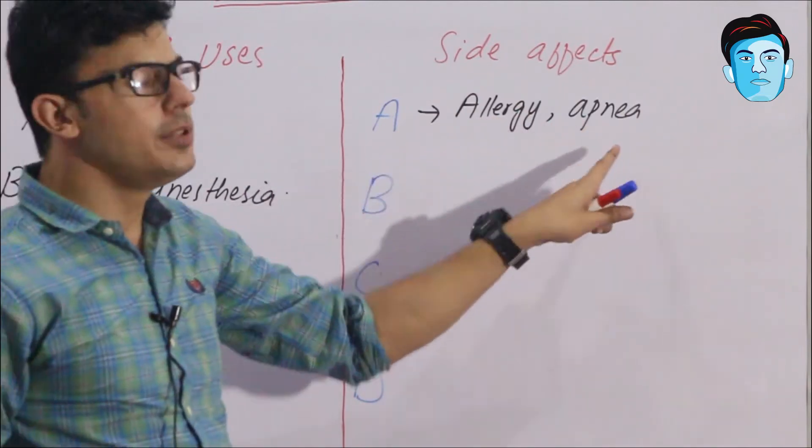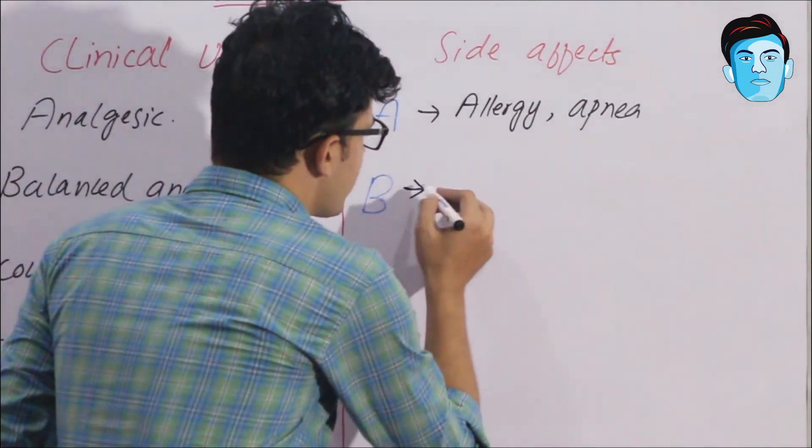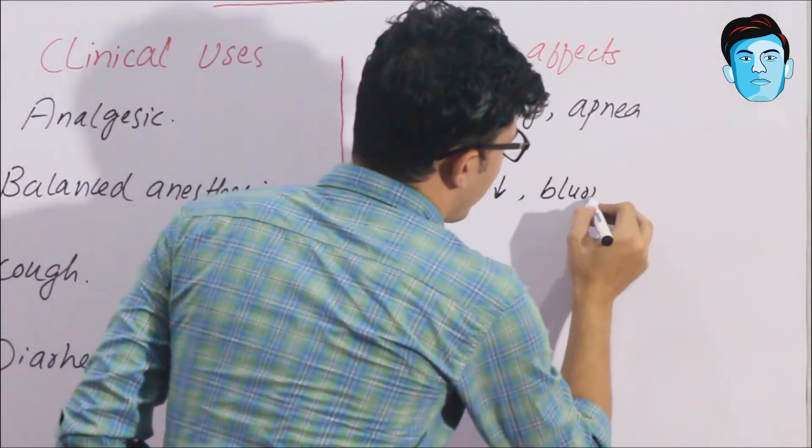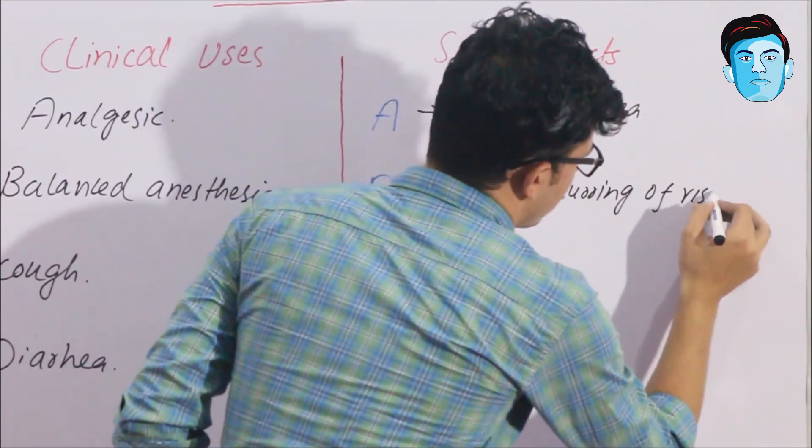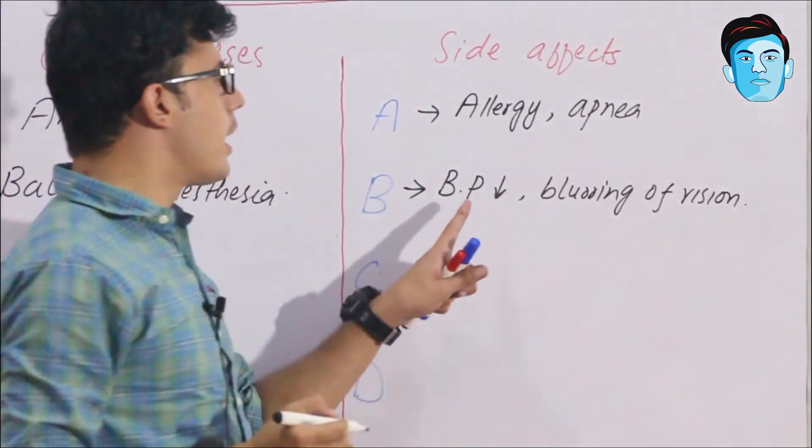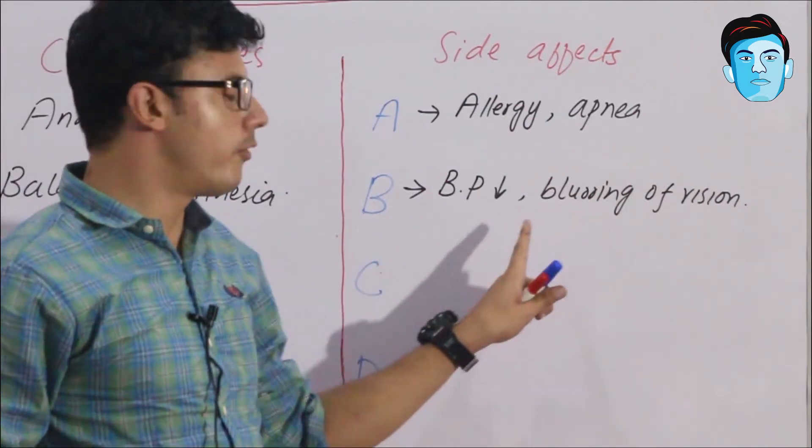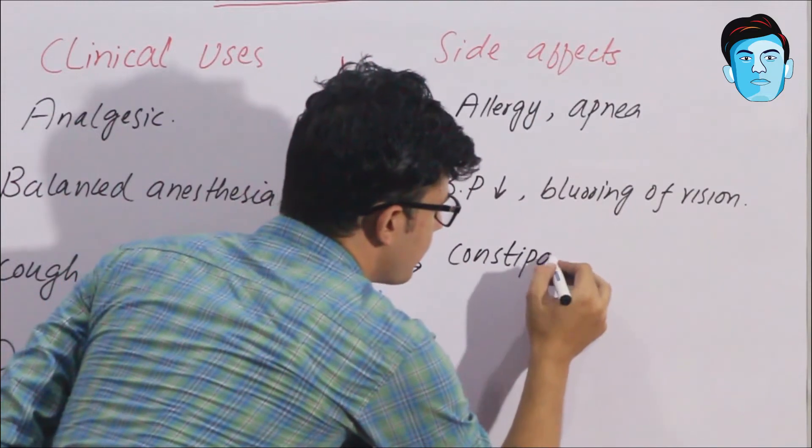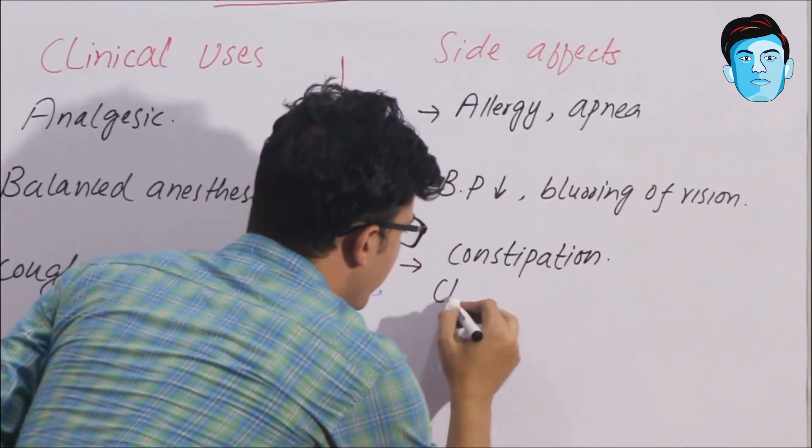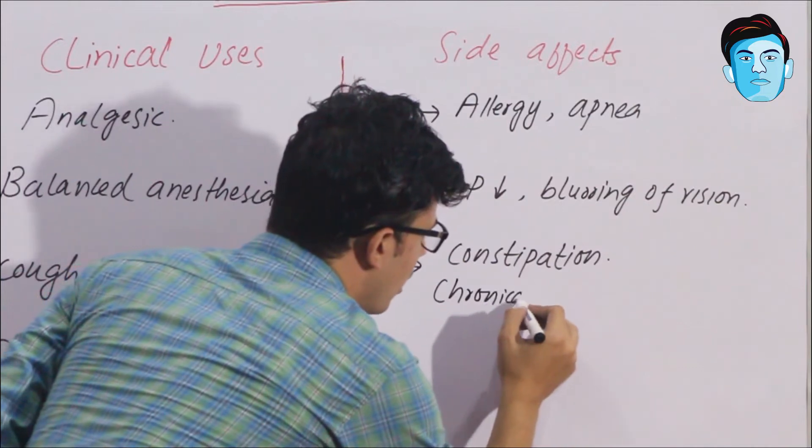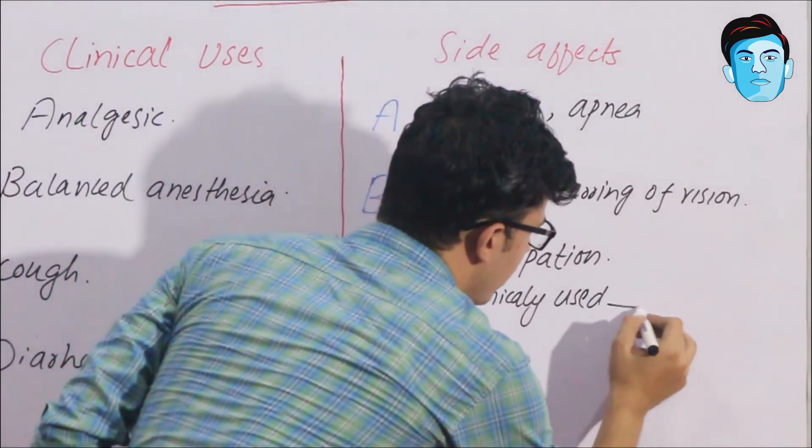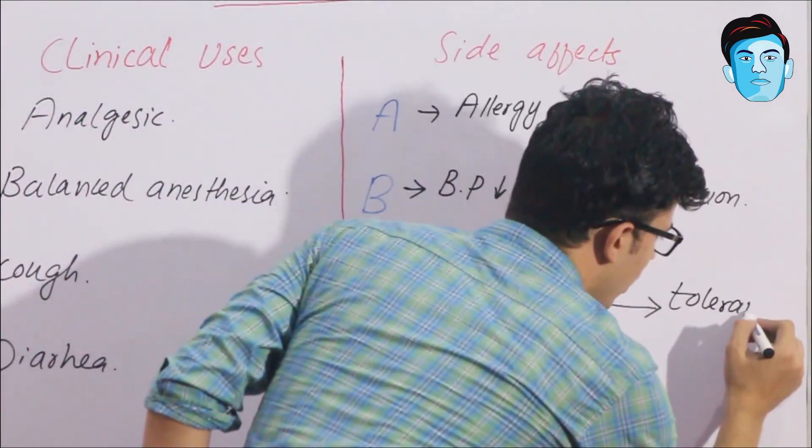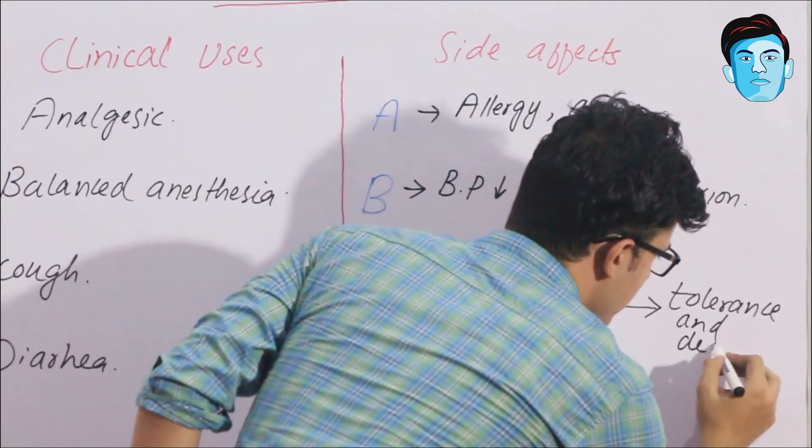B stands for BP decrease and blurring of vision. C stands for constipation, and if someone chronically uses opioid drugs it may lead to tolerance and dependence of the drug.